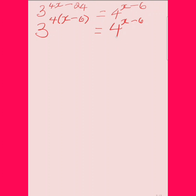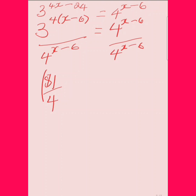At this point, I can divide both sides by 4 raised to the x minus 6. When I do so, on my left side I'm going to have 3 to the 4th power, which is 81, over 4.